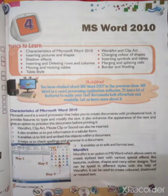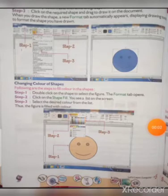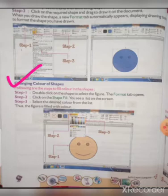Good morning and welcome to my online class. Today I am going to continue Part Two from Chapter Four, MSR 2010. In the previous class I discussed two or three topics from this chapter, and today I am going to start Part Two. So now, coming to Part Two of Chapter Four: Changing Color of Shape. In the last class we discussed how to insert a shape.